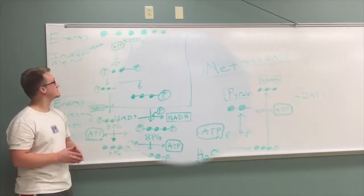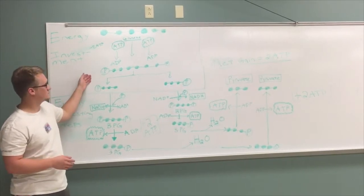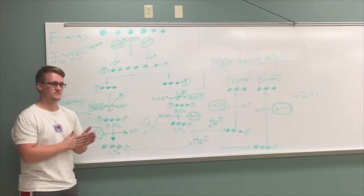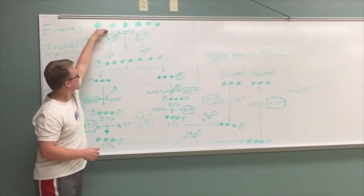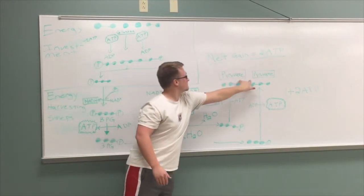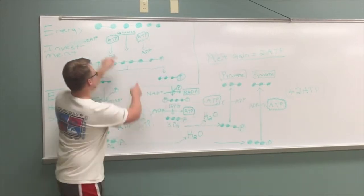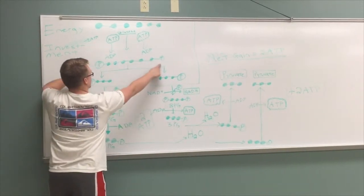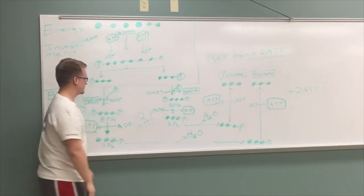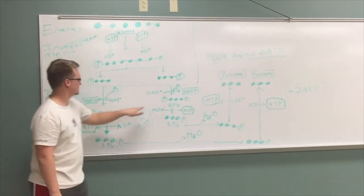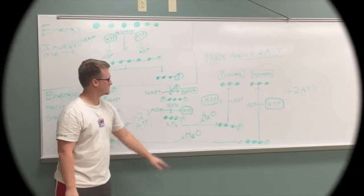Glycolysis occurs in the cytoplasm outside the mitochondria and it is the breakdown of glucose to two molecules of pyruvate. Energy is invested to activate glucose. Two ATPs are gained, and oxidation results in NADH, which will be used later for additional ATP production.